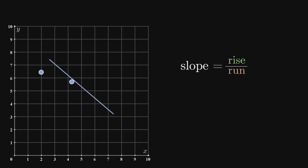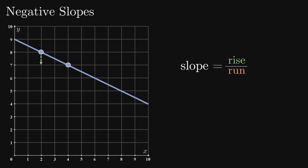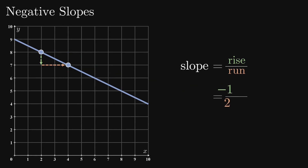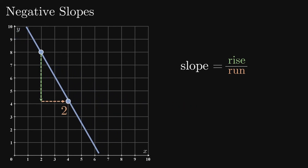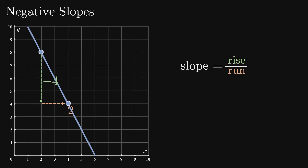Negative slopes are a result of the rise and the run having opposite signs. A line with a negative slope decreases or goes down from left to right. For a fixed positive run value, as the rise becomes more negative, so does the slope, and the line becomes steeper.